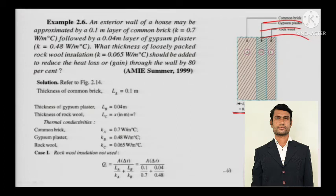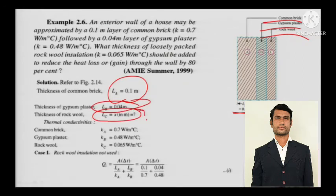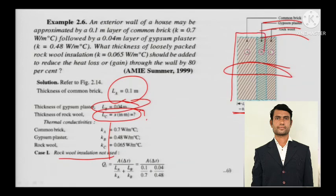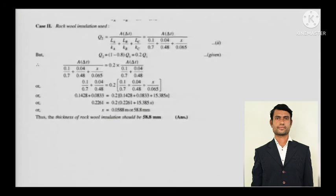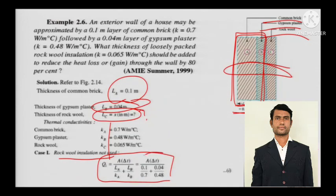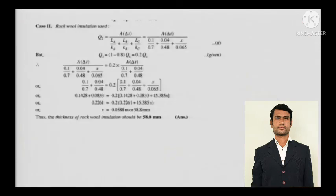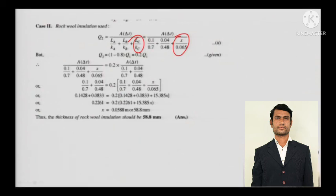The thickness of common brick and gypsum plaster are given, but the thickness of rock wool is unknown and needs to be found. Thermal conductivities of all three elements are given. Case one: rock wool insulation not used — so it is only about the two layers. Solve it to get Q1. Case two: when rock wool insulation is added as the third element, Q2 will be 80 percent lesser than Q1.